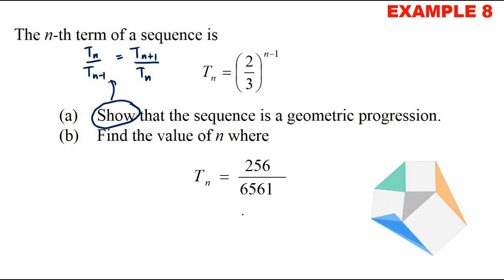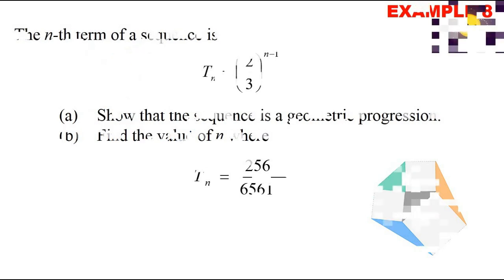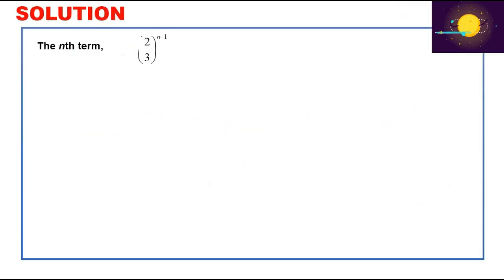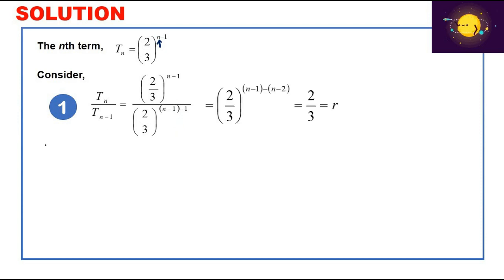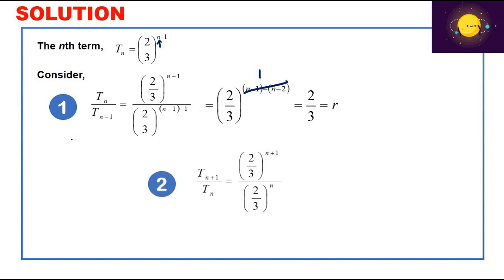For the next problem, our general term is tn = (2/3)^(n-1). To prove it is a geometric progression, consider tn/tn-1: substituting gives (2/3)^(n-1) divided by (2/3)^(n-2). Simplifying the exponents: (n-1) minus (n-2) = 1, so tn/tn-1 = 2/3, which is the common ratio r.